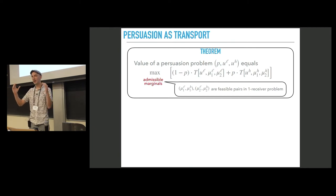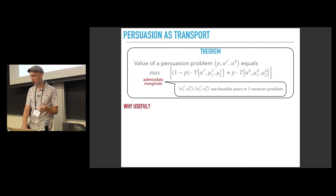So essentially, the whole complexity of the multi-receiver persuasion is absorbed by the transportation problems here. Transportation problems are responsible for determining the right correlation between the beliefs. And this external maximization is identical to the one that we have in the one-receiver persuasion.